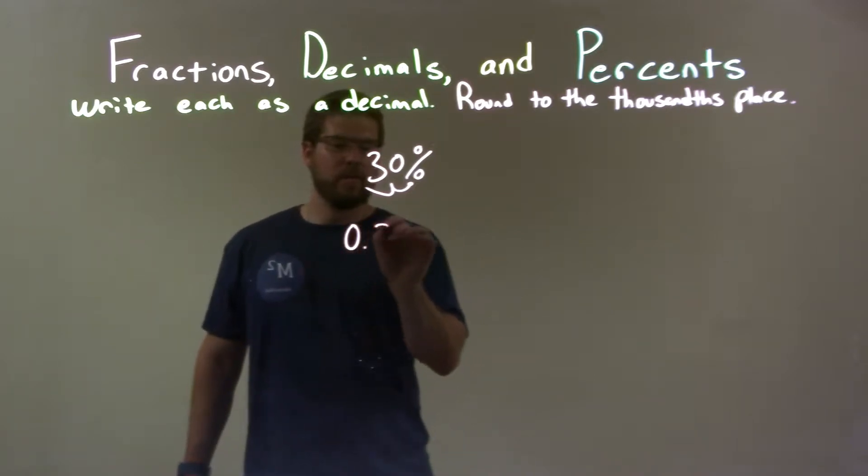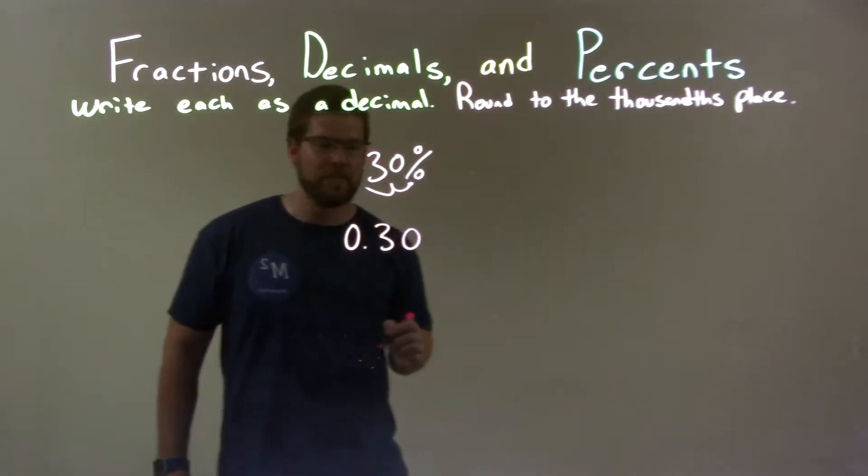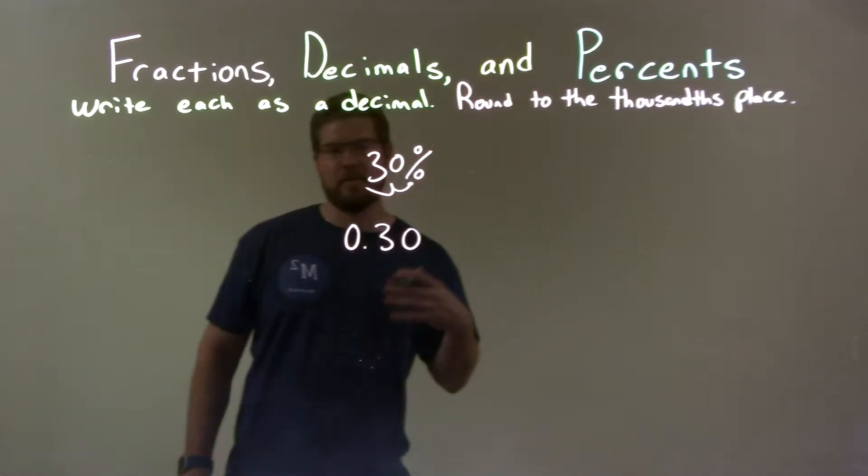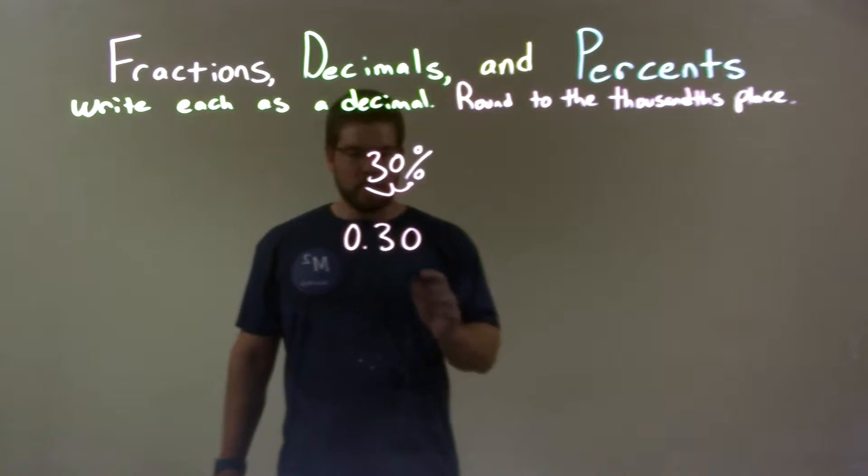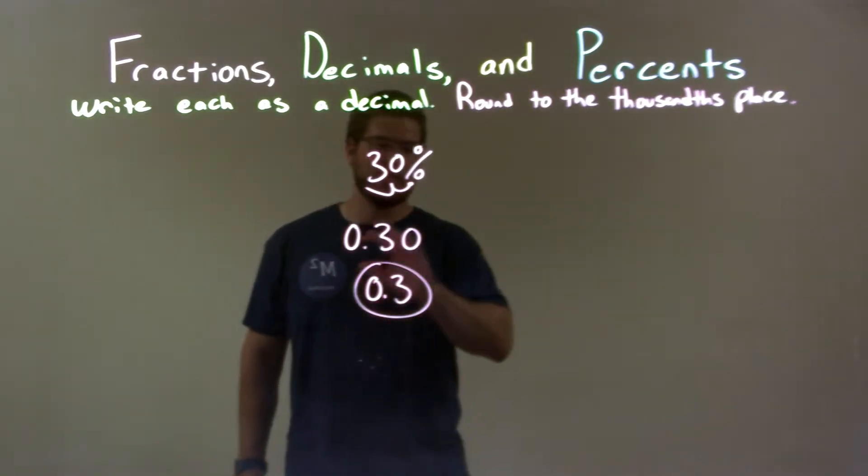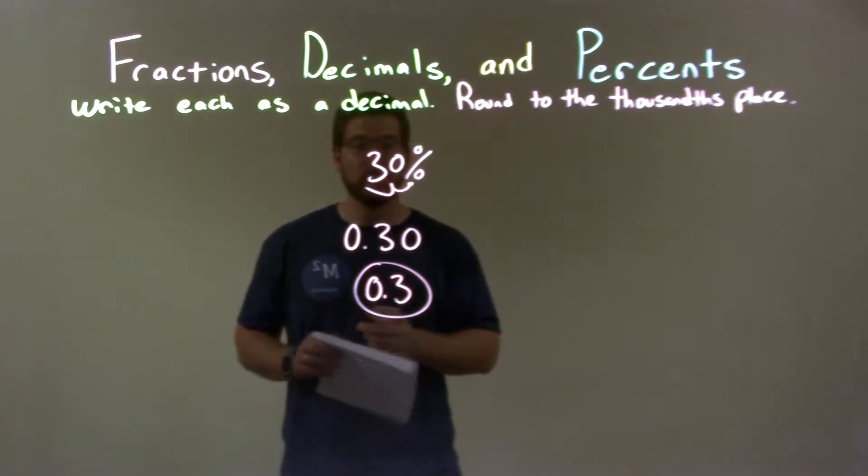So now we're up to 0.30. Now we don't need that trailing zero. Some people say round to the nearest thousandth, but it's just zero afterwards. So we really can write this as 0.3, because no need for zeros, and then we have our final answer.